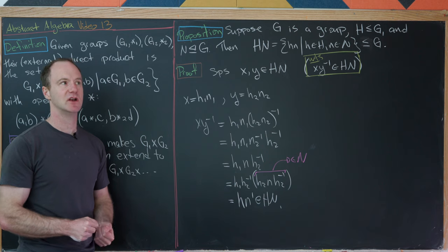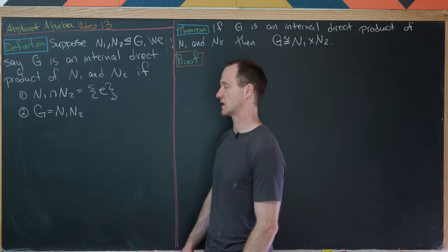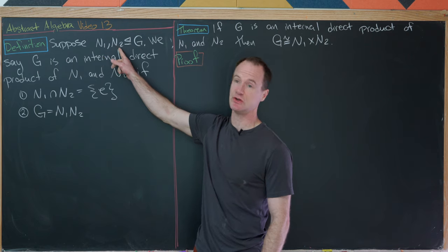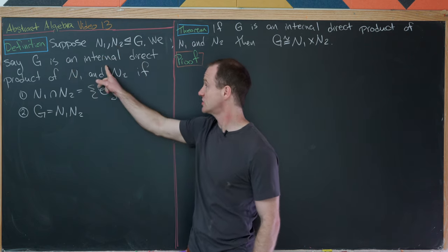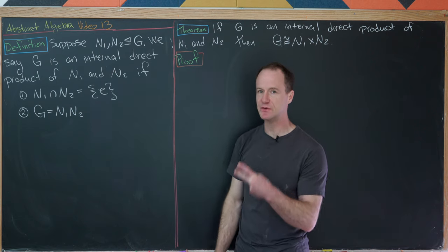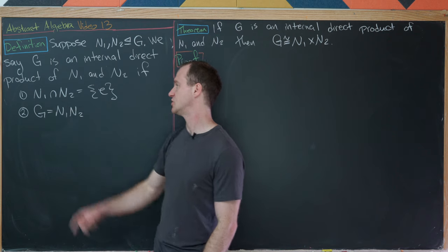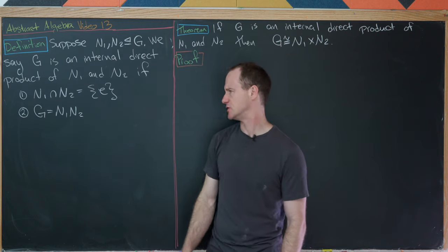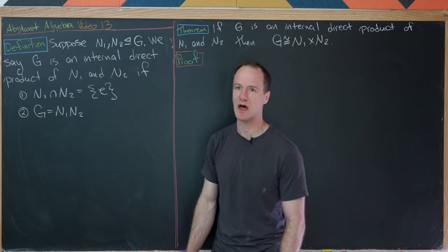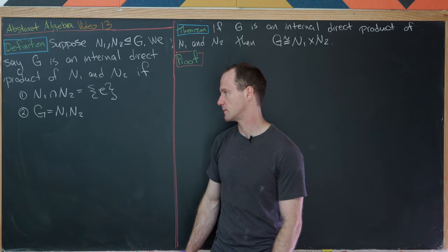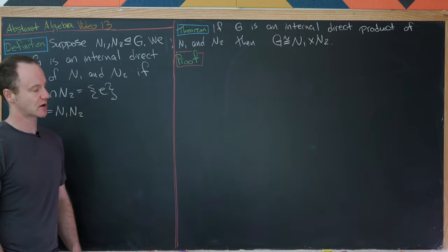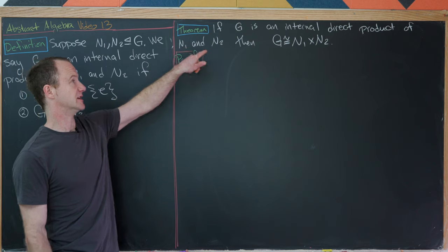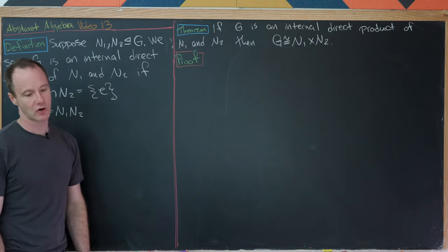Now the definition of the internal direct product: suppose G has two normal subgroups N1 and N2. We say G is an internal direct product of N1 and N2 if N1 ∩ N2 = {e} and G = N1N2. This is called an internal direct product because it is related to an external one: if G is an internal direct product of N1 and N2, then G is isomorphic to N1 cross N2.